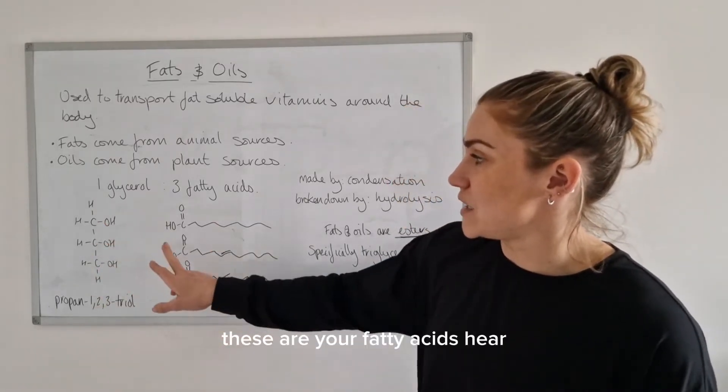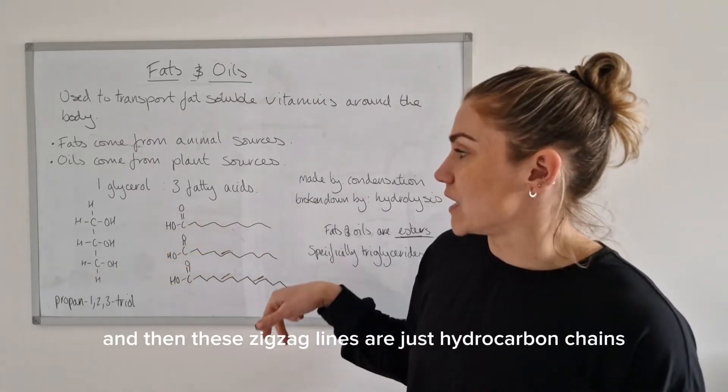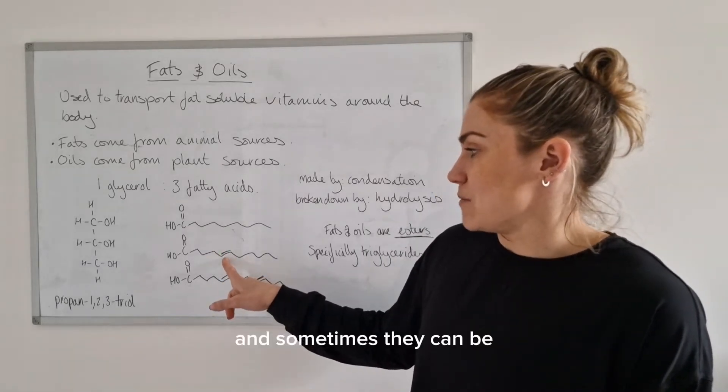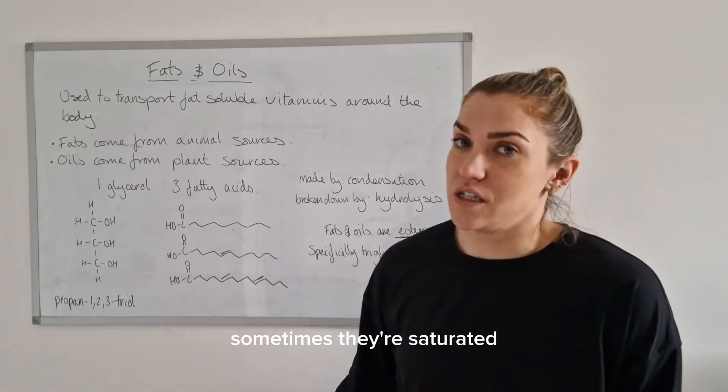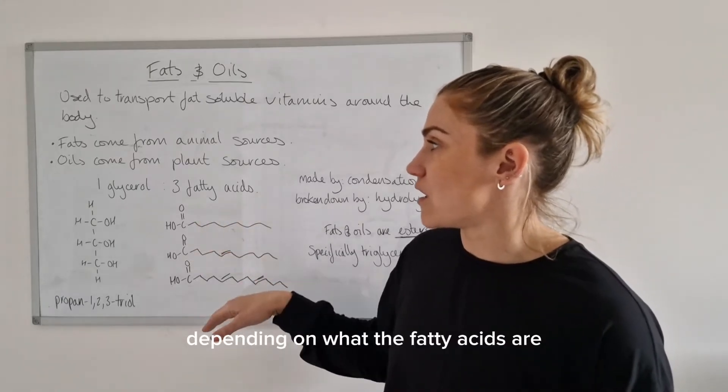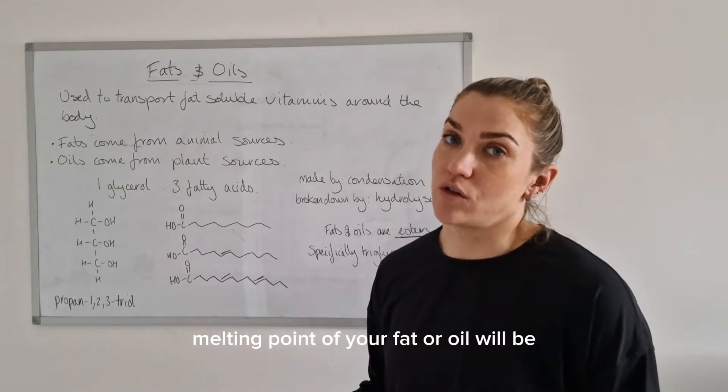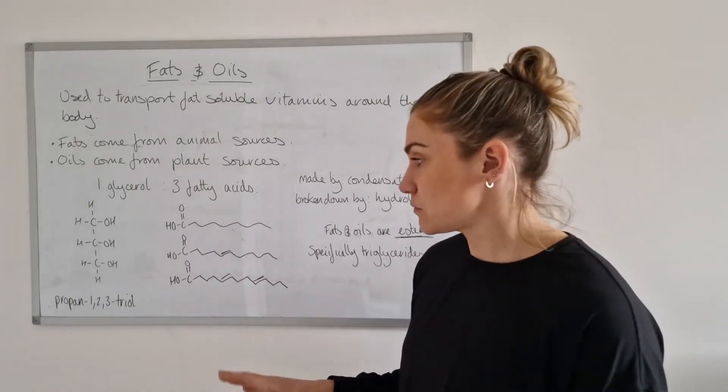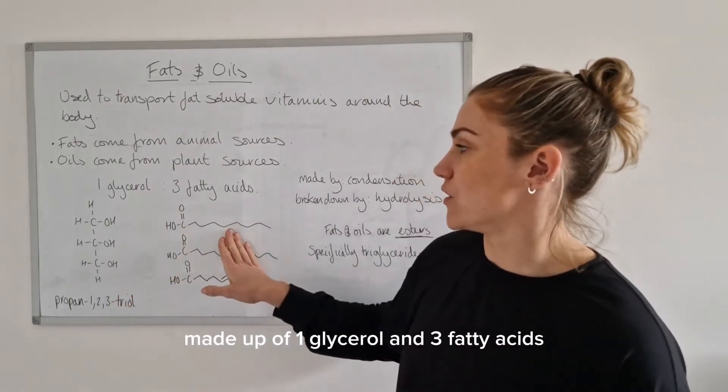These are your fatty acids here. They have carboxyl groups on the end, and these zigzag lines are just hydrocarbon chains. Sometimes they can be unsaturated and contain double bonds, sometimes they're saturated and just have all single carbon to carbon bonds. Depending on what the fatty acids are will determine what the melting point of your fat or oil will be. That's the basic makeup - one glycerol unit and three fatty acids.